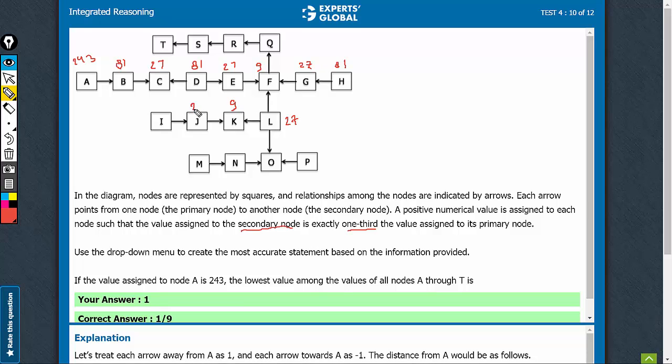Secondary of 9, so, sorry, primary of 9, so 27. Primary of 27, so 81. 9. Secondary of 9, so 3. Secondary of 3, so 1.